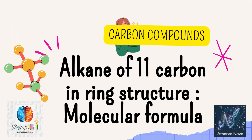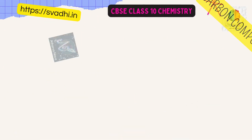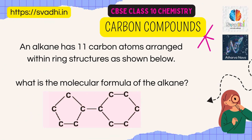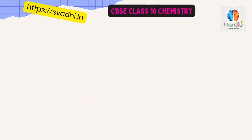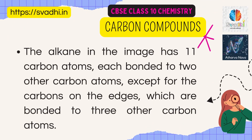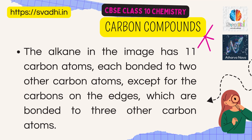An alkane has 11 carbon atoms arranged within ring structures as shown below. What is the molecular formula of the alkane? The alkane in the image has 11 carbon atoms, each bonded to two other carbon atoms, except for the carbons on the edges, which are bonded to three other carbon atoms.